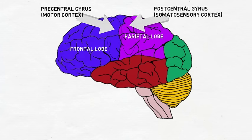The temporal lobe is involved in processing auditory signals and also is important in aspects of learning and memory. The occipital lobes contain major visual processing areas of the brain like the primary visual cortex.